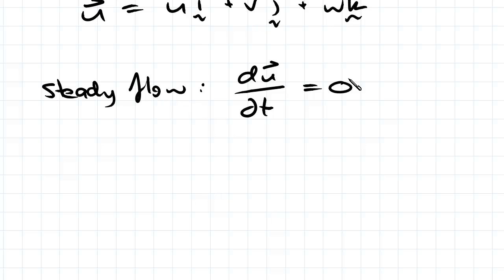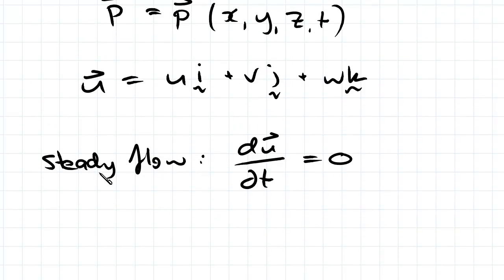Looking at the steady flow velocity field, there are three components each in different directions. If we have this instance here where we have three directions of flow, we term that a three-dimensional flow.